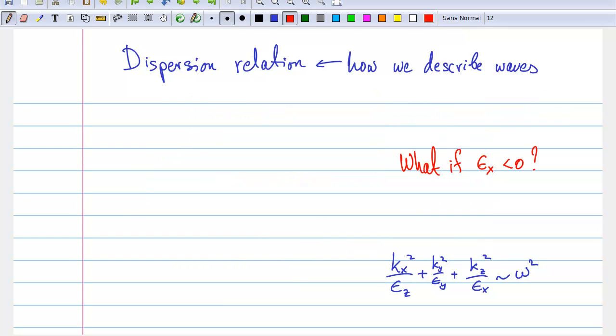But look at what happens when that dielectric function, along a particular direction in the material, becomes negative, like in a metal. The surface describing the dispersion relation then forms a hyperboloid, and this is why we call these materials hyperbolic.